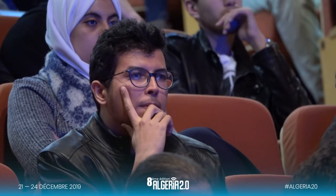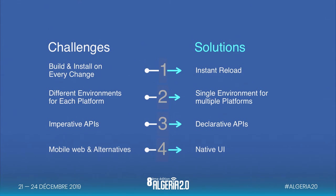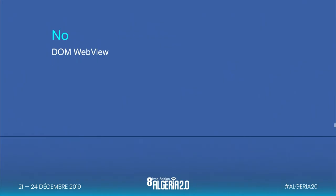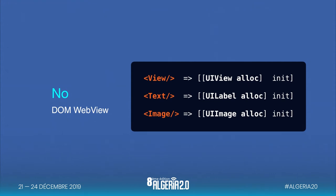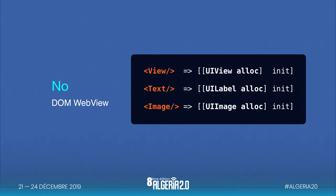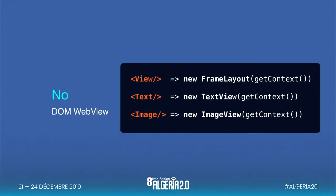With React Native we use declarative APIs. It's way better than hybrid applications because in React Native you don't just write web technologies — it gets translated to native UI. If there are any iOS developers here: the left side is React Native and the right side is the native code for building interfaces in iOS. Similarly for Android — when you write React Native on the left side, it gets translated to Android native code on the right side.